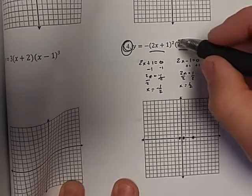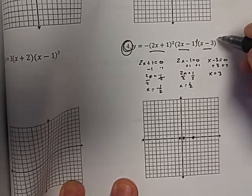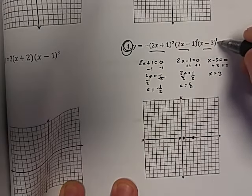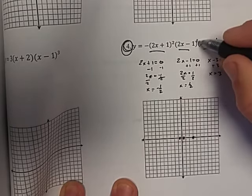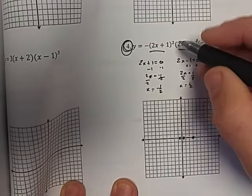We also need to notice the multiplicities. There's no exponent here, so we'll put a one and we'll put a one there. So this one has a multiplicity of one, another multiplicity of one, and this one has a multiplicity of two. So these two are going to go through, and this one is going to bounce.